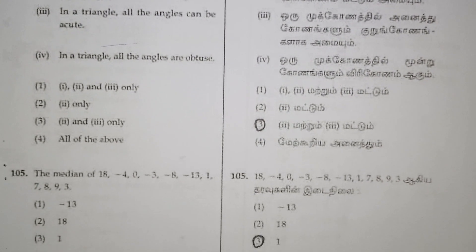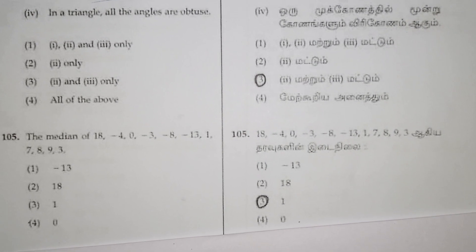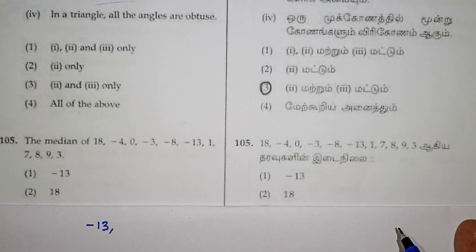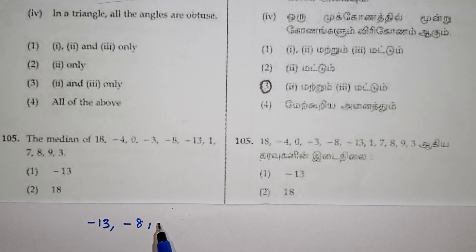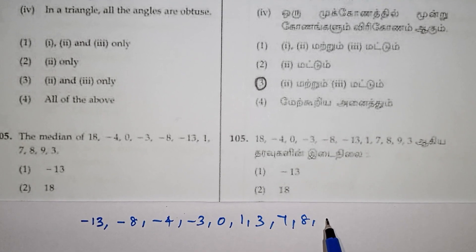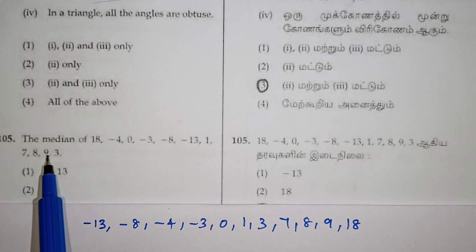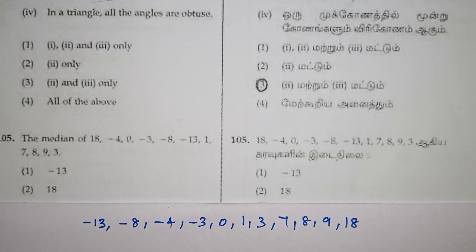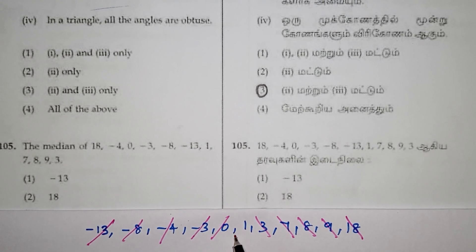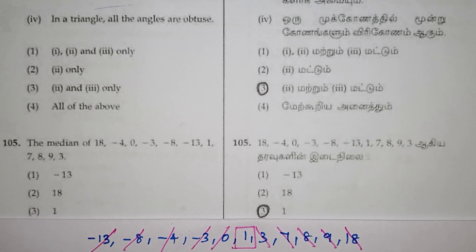Find the median of the following data. The median is the middle value. First, arrange the data in ascending order. After arranging, we have 11 numbers — count 1 through 11. The middle, or 6th value, is the median. If you cancel from both ends, the remaining value is the median. That is the third option.